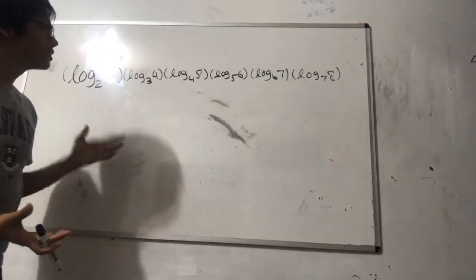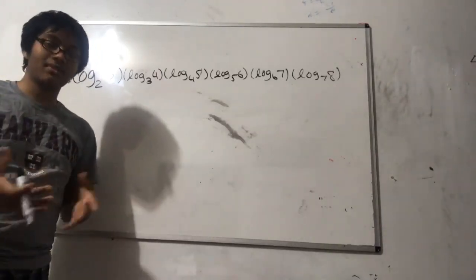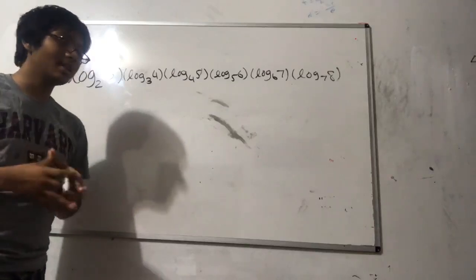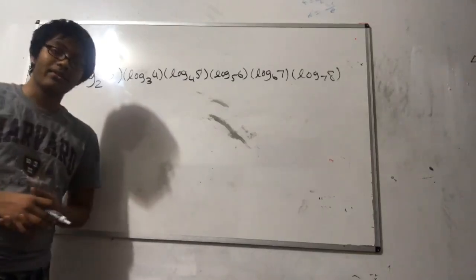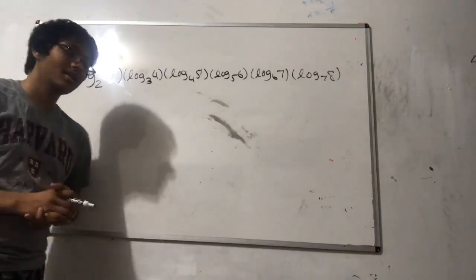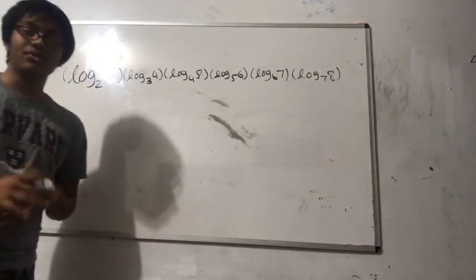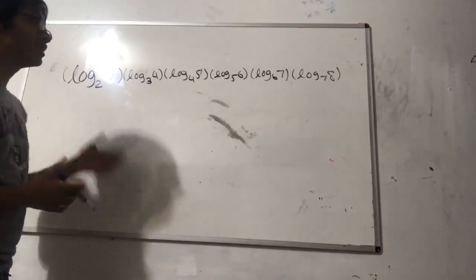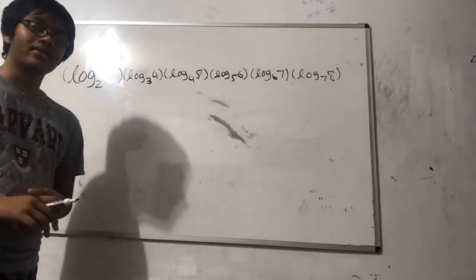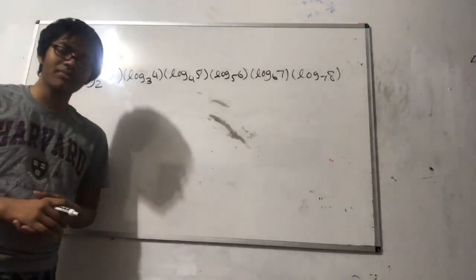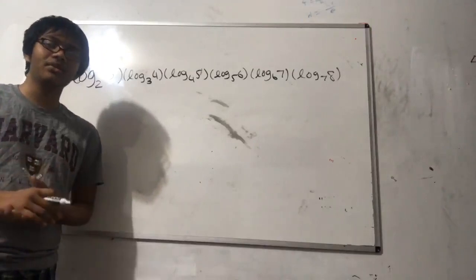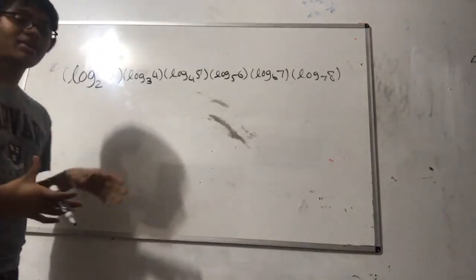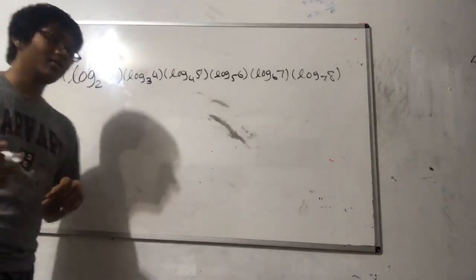These numbers are prime so they won't result in a nice number, but there's actually a really nice trick that can help you solve this kind of problem. The method is to realize that you can use the chain rule of logarithms to easily solve this. So what do I mean by the chain rule of logarithms?